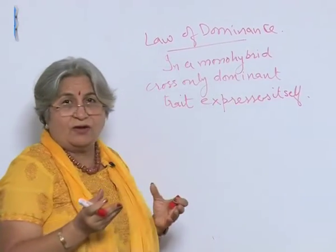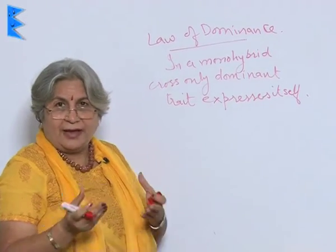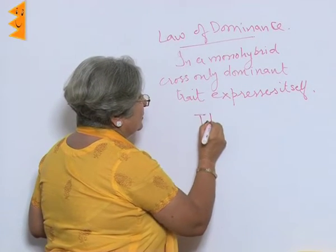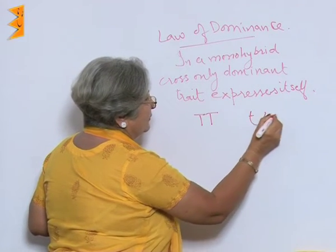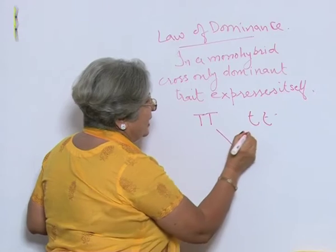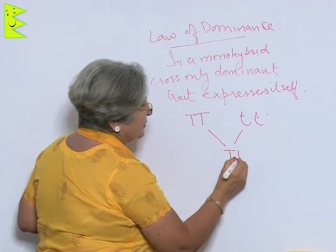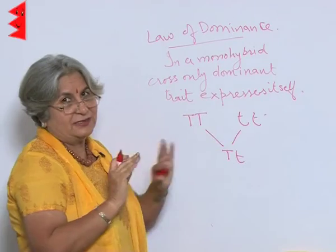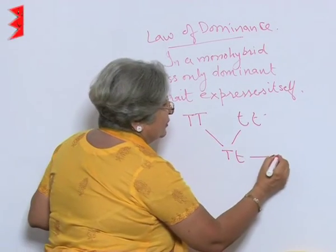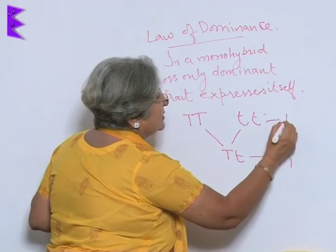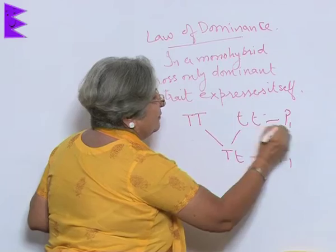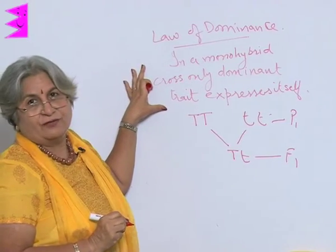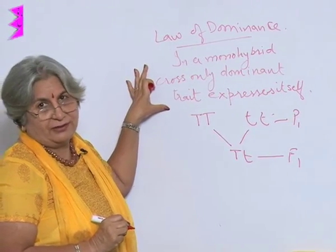This can also be expressed in a different way: the parent generation was tall and dwarf, and the F1 generation was all tall — dwarfness did not express itself. So this is F1, this is P1, and on this basis this definition was concluded.